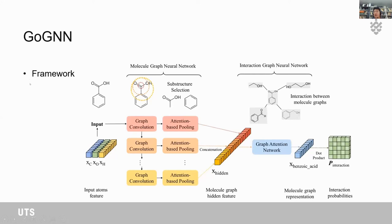Here is the framework of our proposed GeoGNN. We have two main parts: the molecule graph neural network and the interaction graph neural network. The molecule graph neural network contains several graph convolutional operations used to embed the molecule graph into low-dimensional representations. We use attention-based pooling to select a substructure to represent the molecule graph. The molecule graph hidden features are then fed into the interaction graph neural network, which considers interactions between molecule graphs, and we use a graph rotation network to compute interaction probabilities.